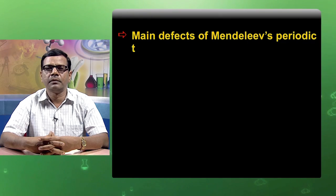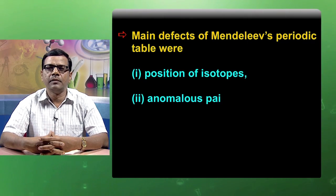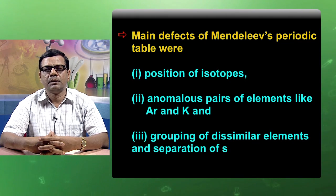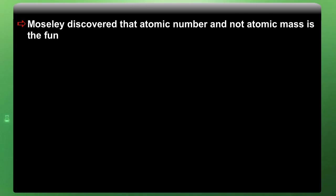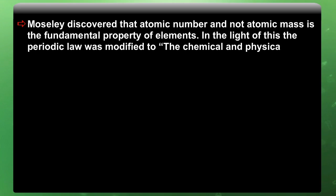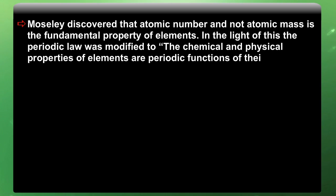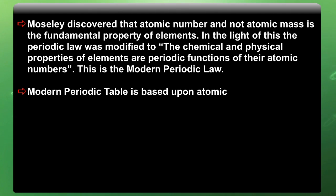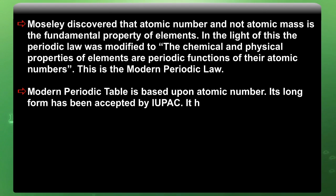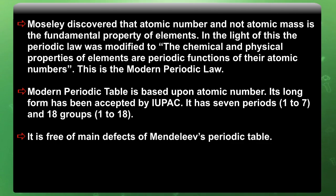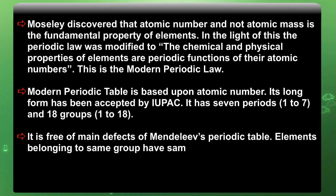The main defects of Mendeleev's periodic table were: position of isotopes, anomalous pairs of elements like argon and potassium, and grouping of dissimilar elements and separation of similar elements. Moseley discovered that atomic number, and not atomic mass, is the fundamental property of elements. In light of this, the periodic law was modified: the chemical and physical properties of elements are a periodic function of their atomic numbers. This is the modern periodic law. The modern periodic table is based upon atomic number; its long form has been accepted by IUPAC. It has seven periods (1 to 7) and 18 groups (numbered 1 to 18), and it is free of the main defects of Mendeleev's periodic table.